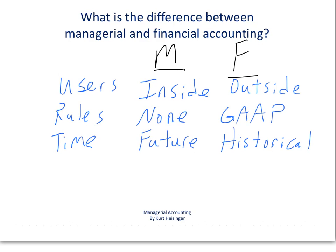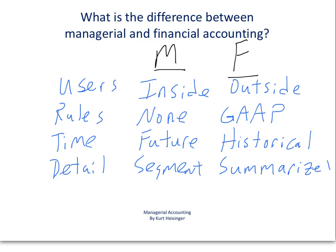Looking at the level of detail, Managerial Accounting information tends to be fairly detailed. We might be looking at a particular segment of the company — for example, maybe we are looking at the profitability of one individual type of product that we sell, not the entire company. For Financial Accounting, we tend to summarize the information, and that information is set up in the form of financial statements for outside users.